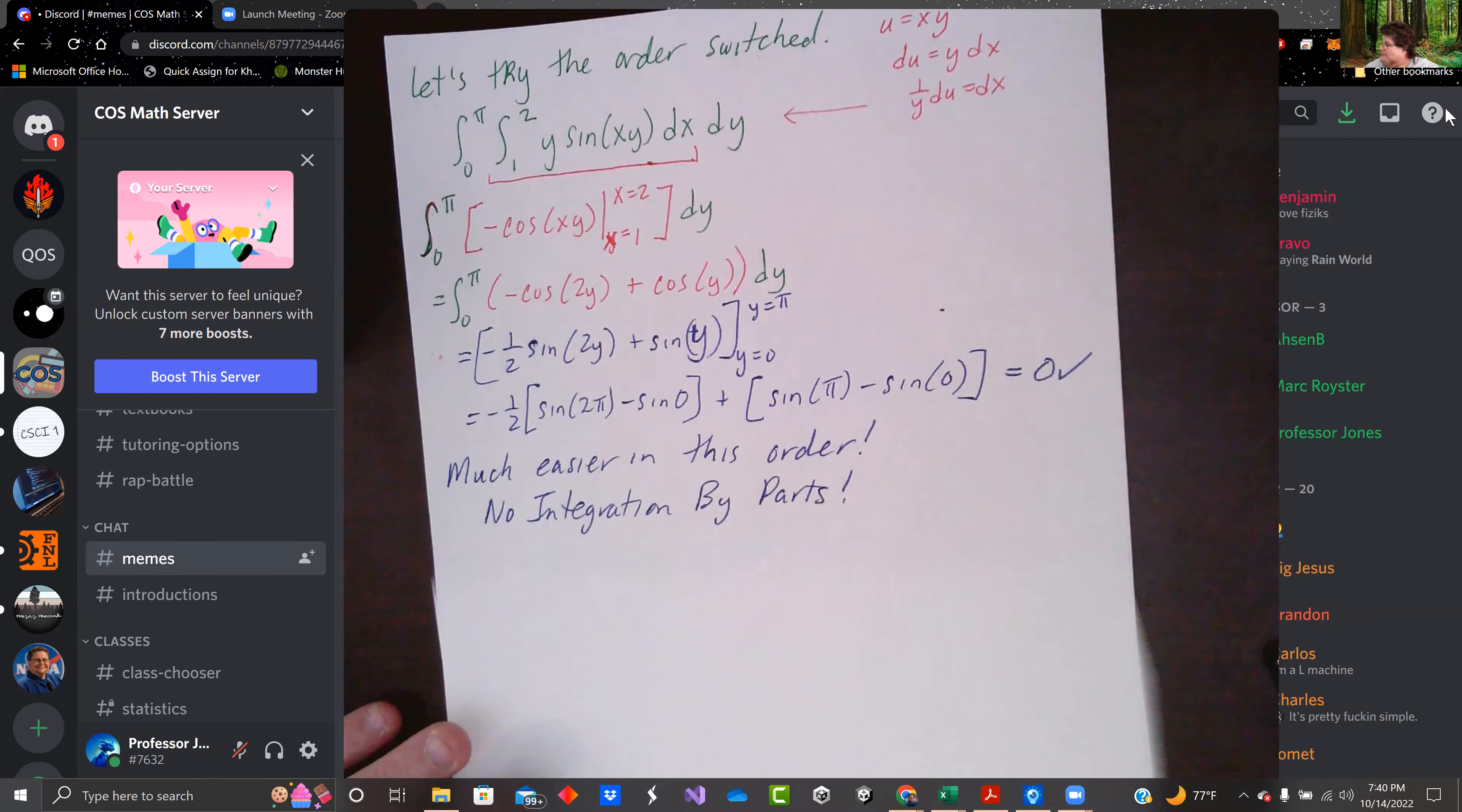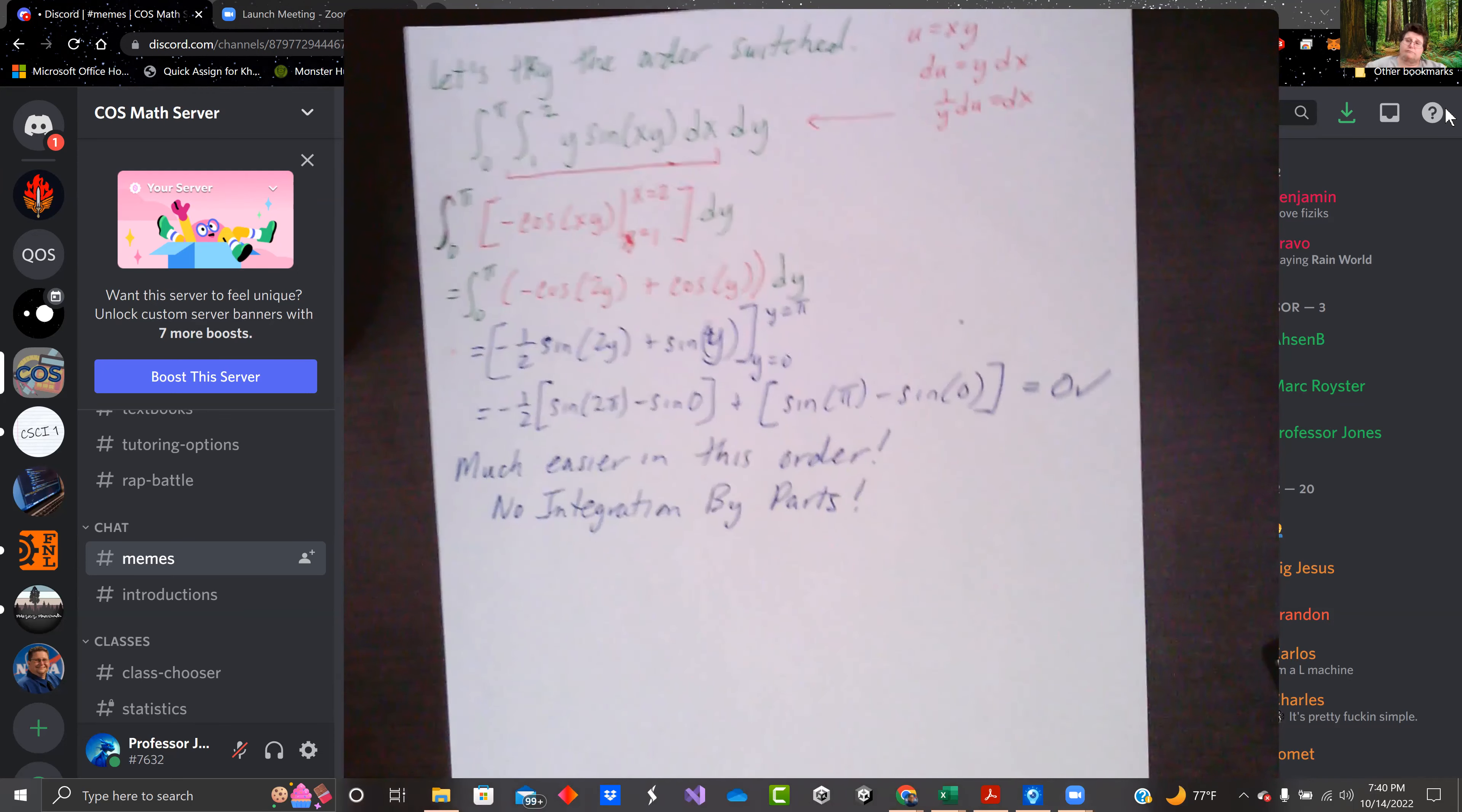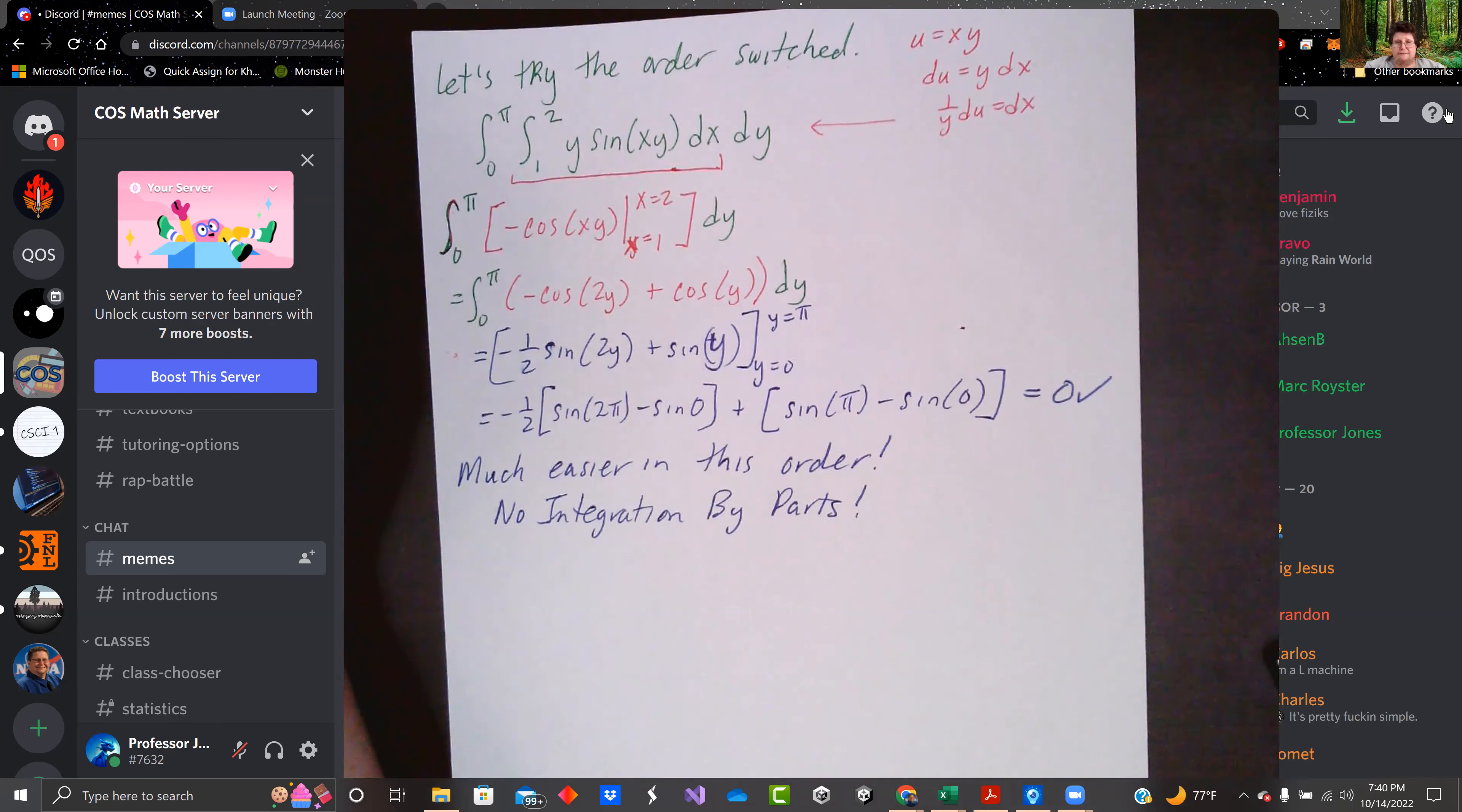And you can see the steps. We still get zero again. It's much easier in this order. And there was no integration by parts. Pause it if you need to verify my work.